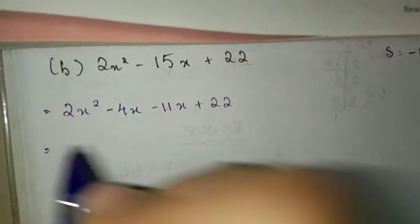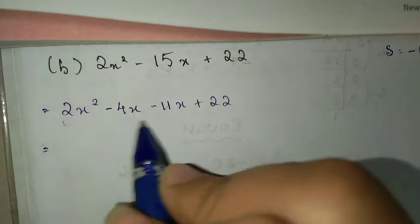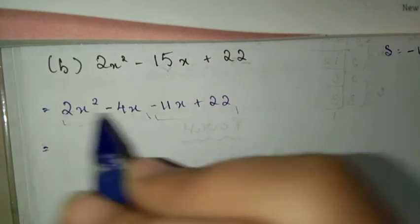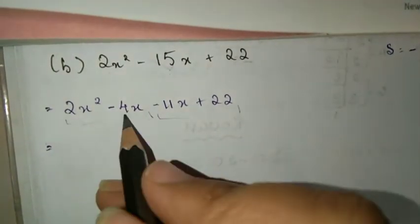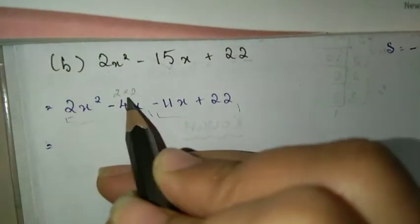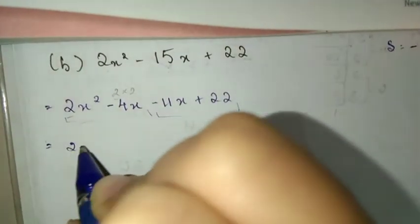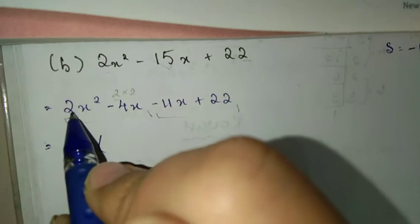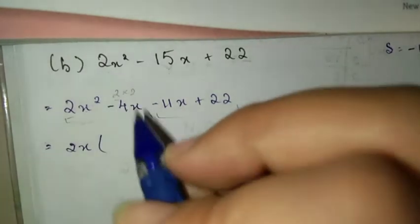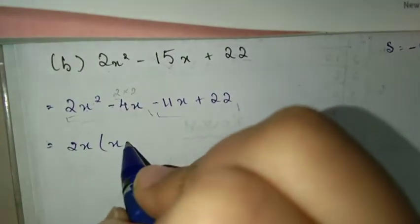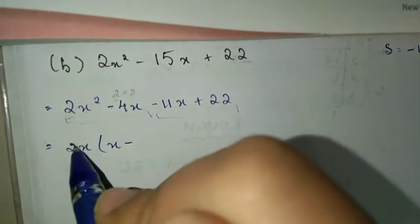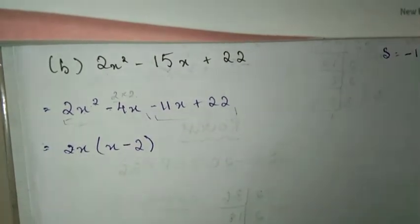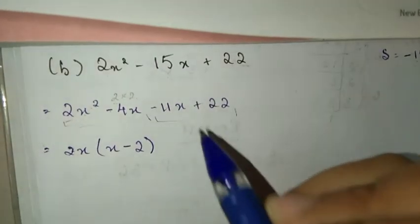Now instead of minus 15x, we're going to substitute minus 4x minus 11x plus 22. Now we factor. From the first term, for the first two terms, 2 is common. So 2x times x, we can take out x as common, so x open bracket, 2 can come out.